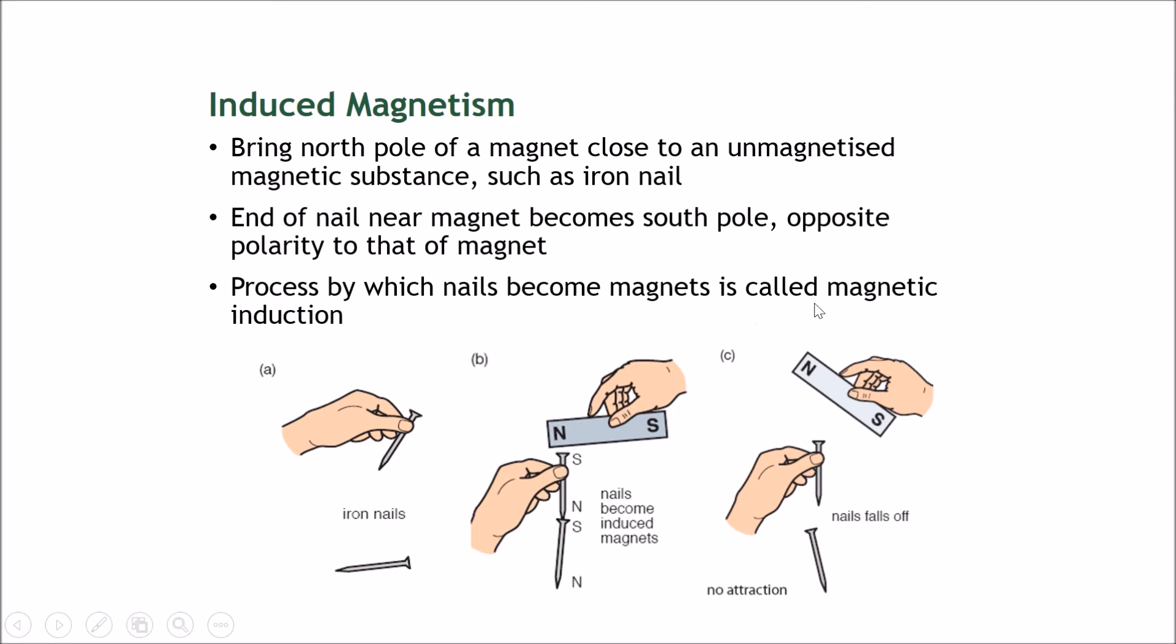Now let's look at picture C. Picture C shows that when this magnet at first was near but now is being brought away, strangely this nail falls off—the second layer of nails falls off. The reason for this is because...